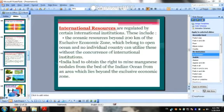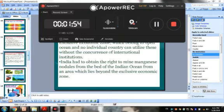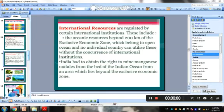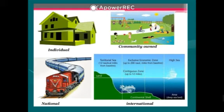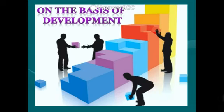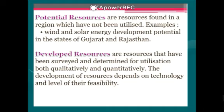So this is the important classification of resources on the basis of origin, ownership, and international level. Examples: garden is community-based, our house is individual, railway is national, and the Exclusive Economic Zone is international. On the basis of development, resources are classified into two categories: potential resources — those found in a region but not yet utilized, such as wind and solar energy in Gujarat and Rajasthan — and developed resources, which are those already utilized by society and government.